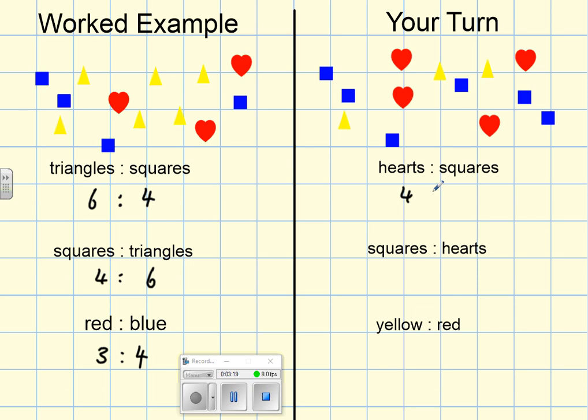And the ratio to squares is 1, 2, 3, 4, 5, 6. And just like when we worked the example, squares to hearts, now I can flip it round: it becomes 6 to 4.